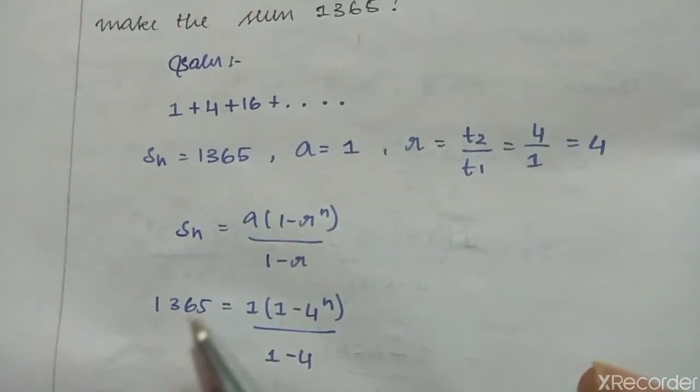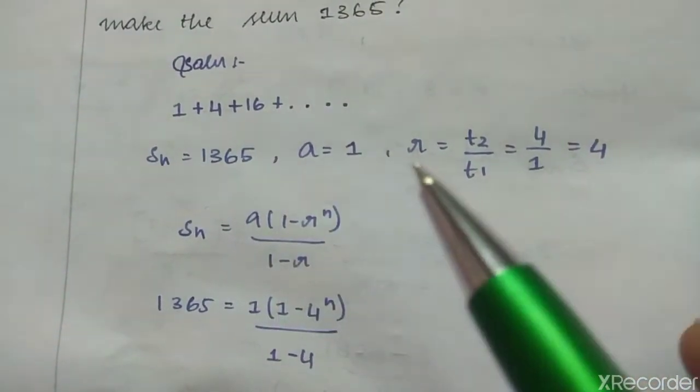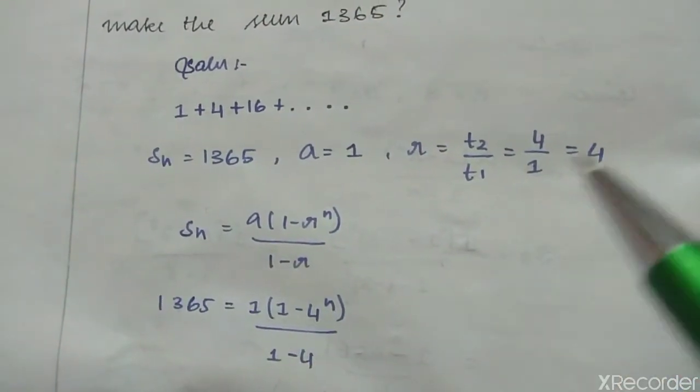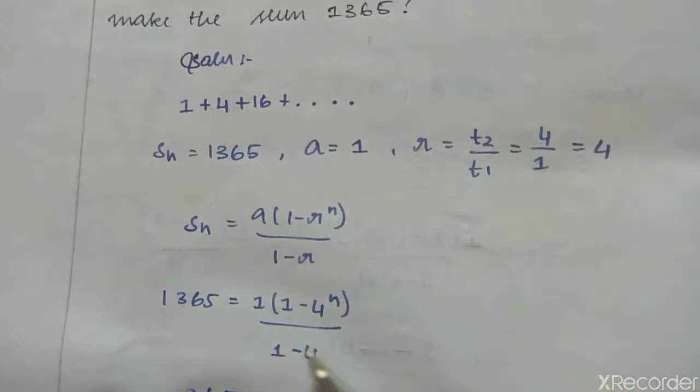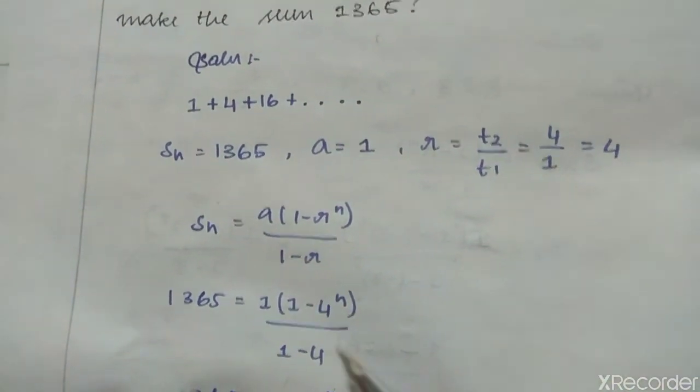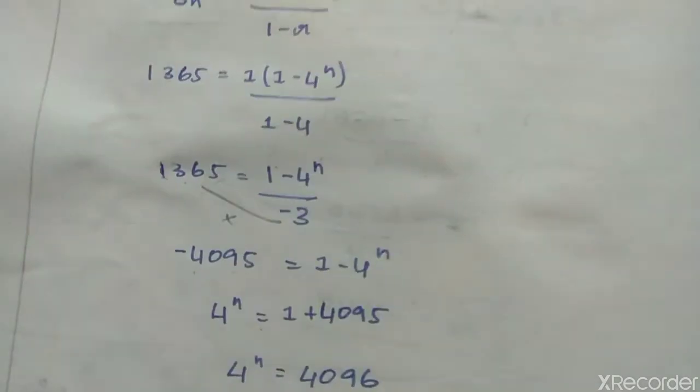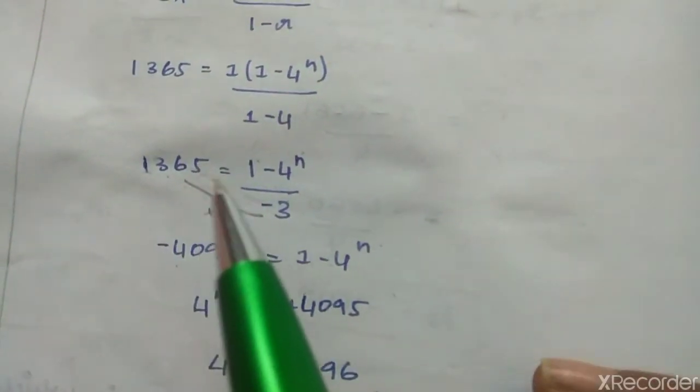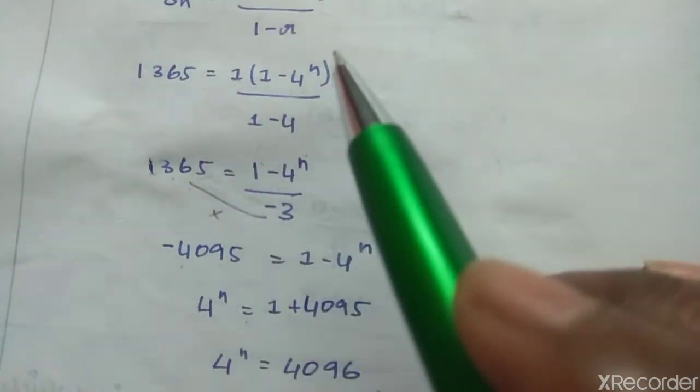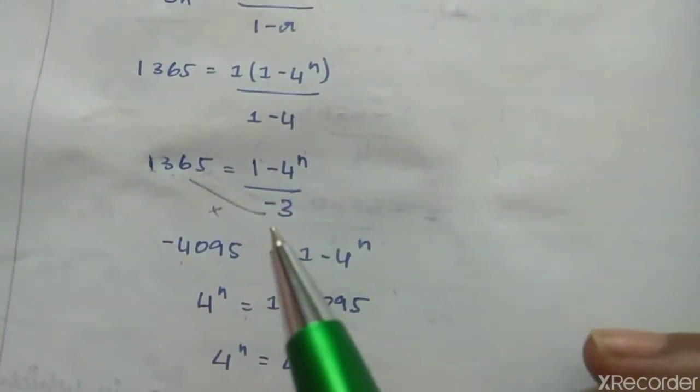Sn value 1365 equals a value 1 times 1 minus r value 4, 4 power n divided by 1 minus r value 4. 1365 equals 1 minus 4 power n divided by minus 3.